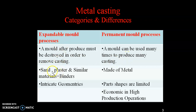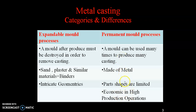In the expandable mould process, sand, plaster, and similar binding materials are used. In the permanent mould process, metal is used to produce the mould. Intricate geometries — intricate meaning complicated — can be performed in the expandable mould process. In the permanent mould process, part shapes are limited. However, it is economical in high production operations because only one mould is used to make many castings.